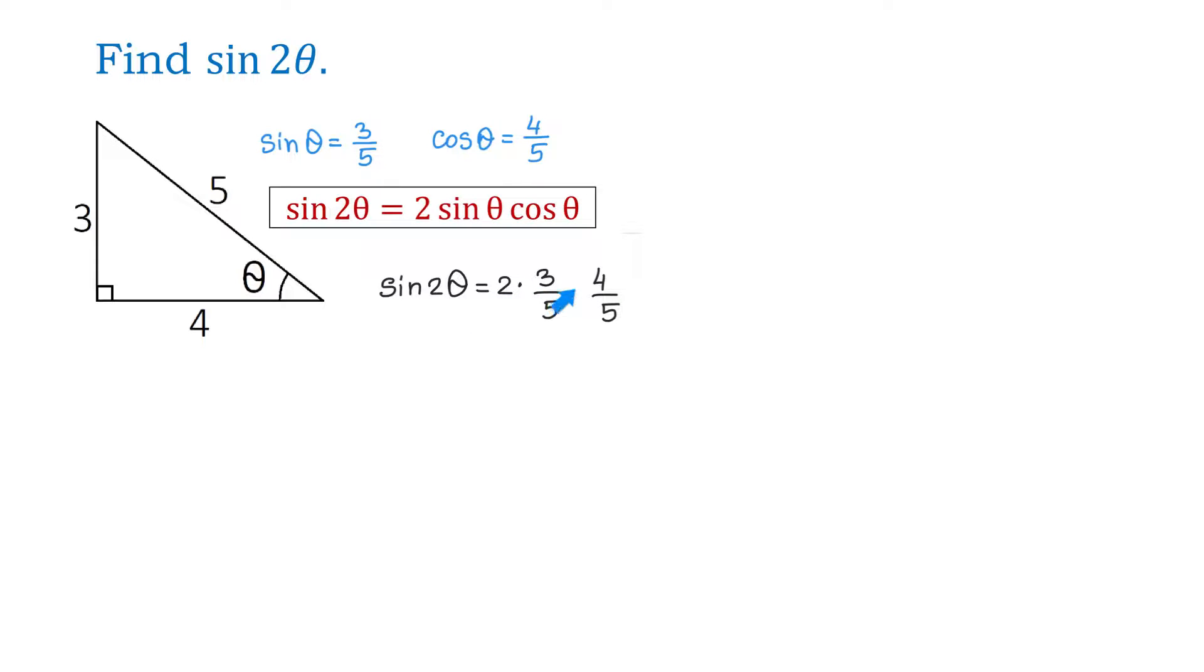2 times 3 times 4 is 24 and 5 times 5 is 25. Then, sine of 2 theta equals 24 over 25.